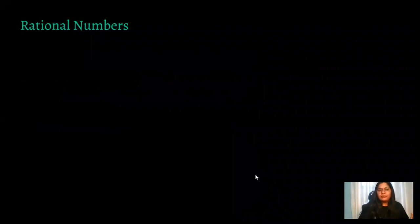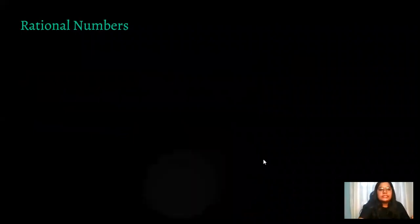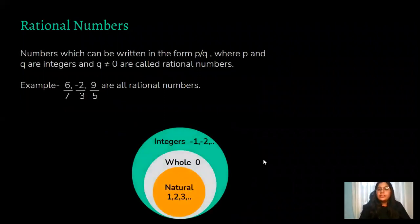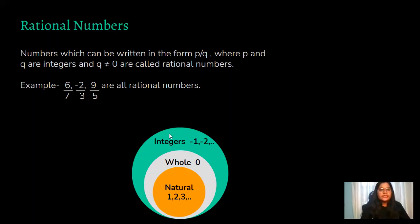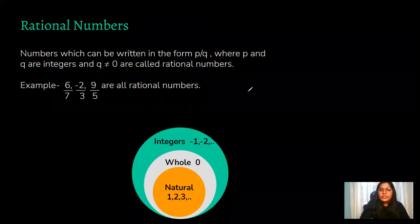Now the main topic — rational numbers. Rational numbers are the numbers which can be written in the form p by q, where p and q are both integers and q is not equal to zero. Q cannot be zero because any number divided by zero is undefined. Examples include six upon seven, minus two upon three, and nine upon five — all are rational numbers.